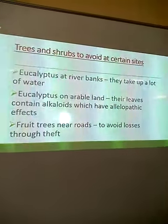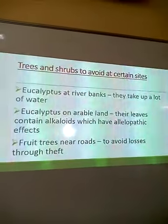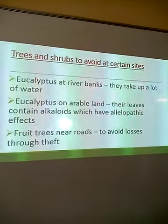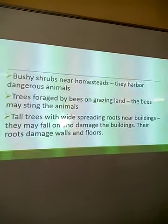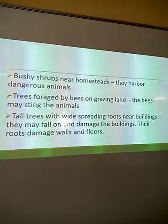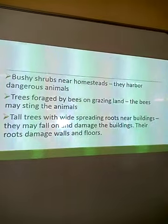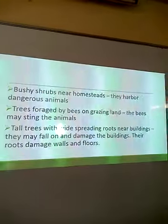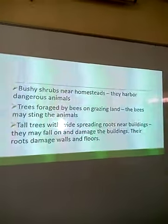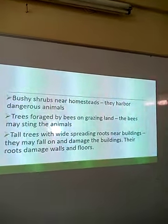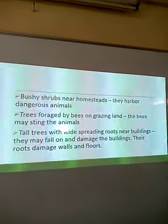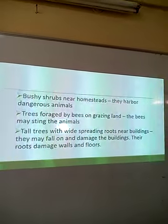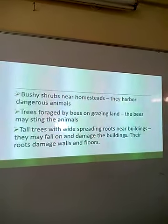Fruit trees near roads should be avoided to prevent losses through theft — if you plant mangoes and oranges near roads, passers-by will harvest on your behalf. Bushy shrubs near the homestead should also be avoided because they may harbour dangerous animals like snakes. Trees foraged by bees on grazing land should be avoided because the bees may sting the animals during grazing if they interfere with the hives.